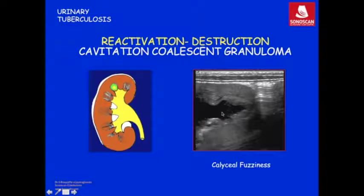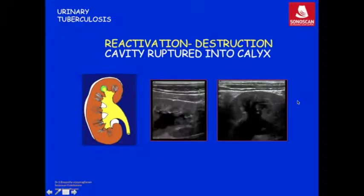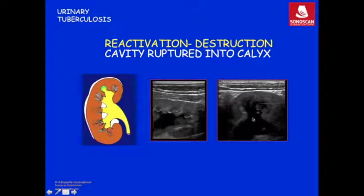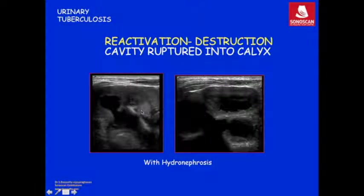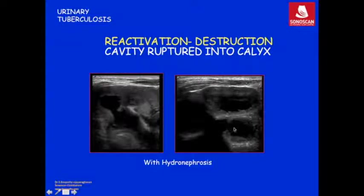This is a papillary cavity very close to the calyx. Because of proximity it erodes into the calyx with escape of infection from the granuloma into the collecting system. This communication between the calyx and the granuloma varies in size. Here we see two kidneys: one with a papillary cavity communicating with the calyx, and another kidney with large parenchymal cavities communicating with the hydronephrotic calyx. Because of hydronephrosis, the communication looks very large.